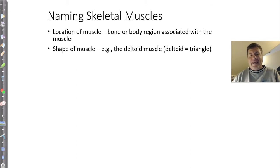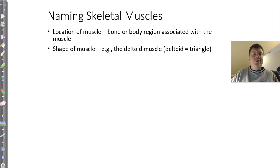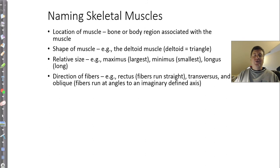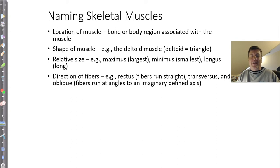When you think about how we name skeletal muscles, the names usually mean something — we didn't give them random names. Location is one way, of course. Shape is another: describing something as a deltoid, since that means triangle, tells you it's a triangular muscle. We talk about muscles based upon size — we can have a maximus, like the gluteus maximus, or the gluteus minimus. We can also talk about longus or brevis; brevis means short. So we use size sometimes to describe muscles.